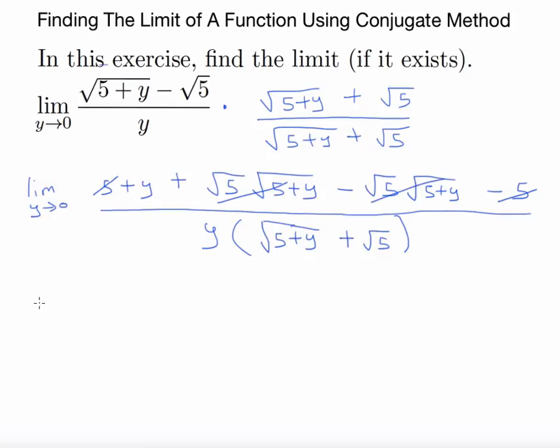...you are left with the limit as y tends to 0 of y over y times root 5 plus y plus root 5. Now the y's can cancel, leaving 1 on top.